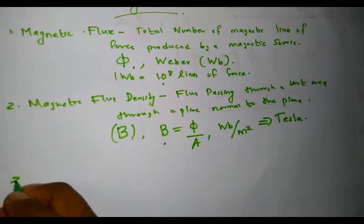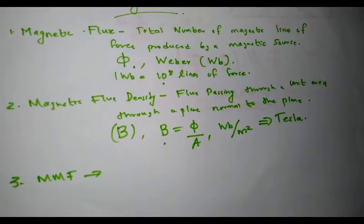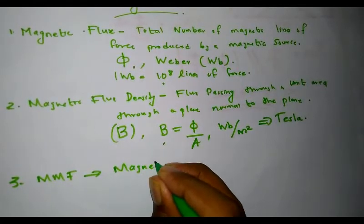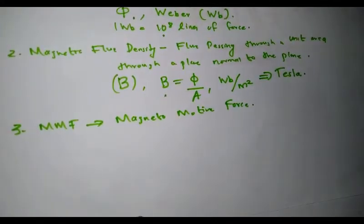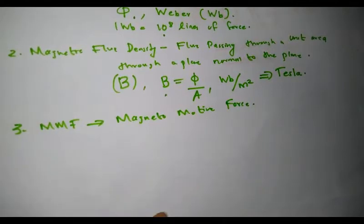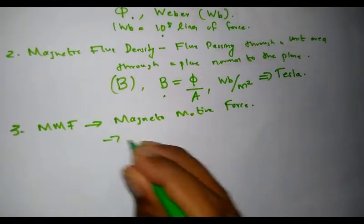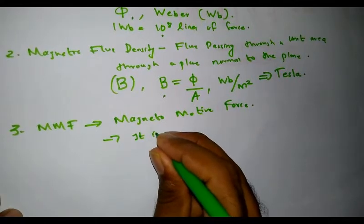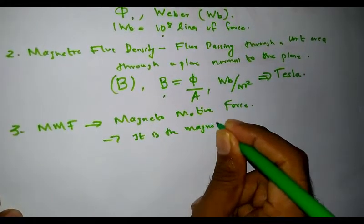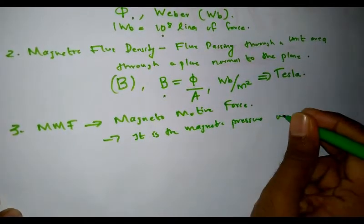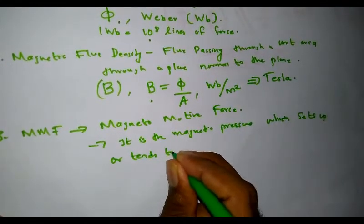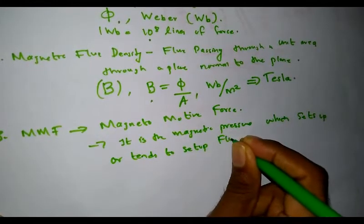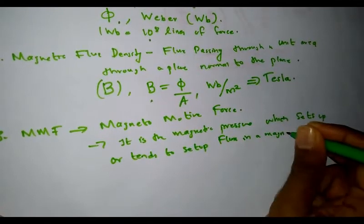The next term is MMF — the expansion of MMF is magnetomotive force. Similar to EMF in the electric concept, we have MMF in the magnetic concept. It is analogous to EMF in an electric circuit. Magnetomotive force is a magnetic pressure which sets up or tends to set up flux in a magnetic circuit.